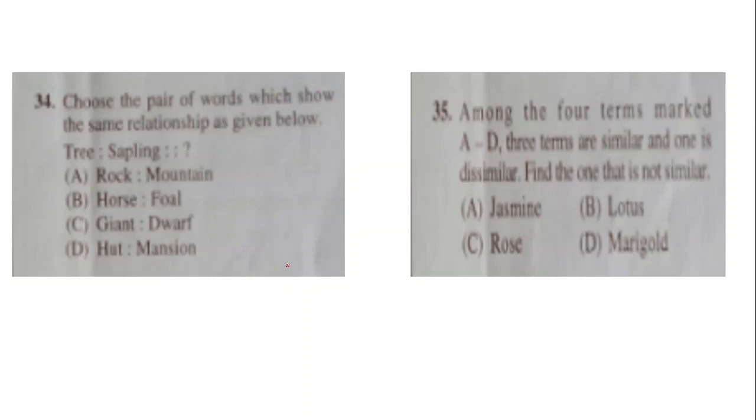Now these questions I have put them together, simple ones. Choose the pair of words which show the same relationship as given below. If tree is to sapling, then let's read the pairs. Rock is to mountain, horse is to foal, giant is to dwarf, or hut is to mansion. If you say hut and mansion, these are opposite words, so this is the wrong option. Giant and dwarf, giant means something that is very big, dwarf is something that is very short a person. If you see rock and mountain, in this pair that has been given, from a sapling a tree grows. So you can say like a tree is the parent and sapling is... a tree is the adult form of sapling.